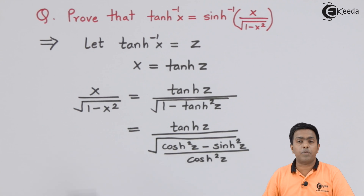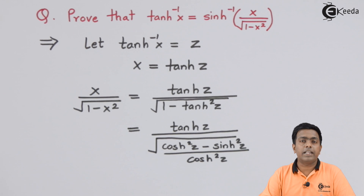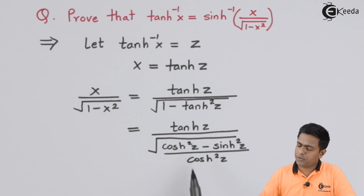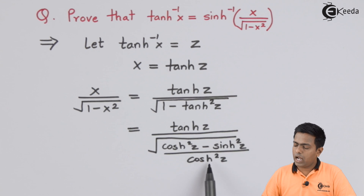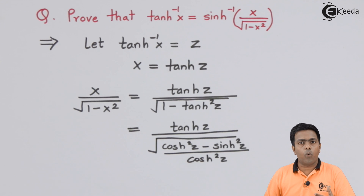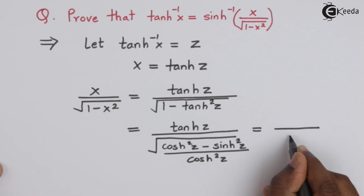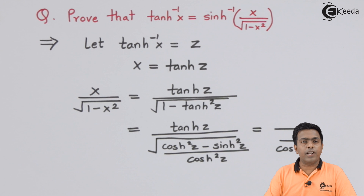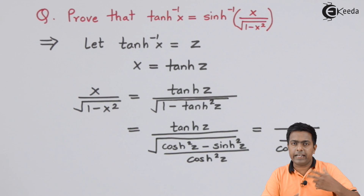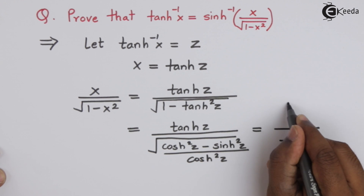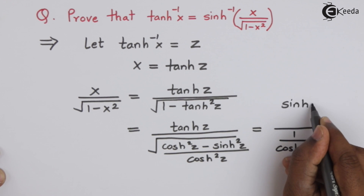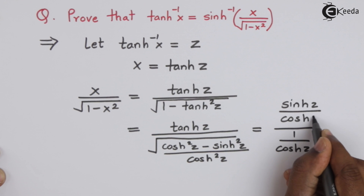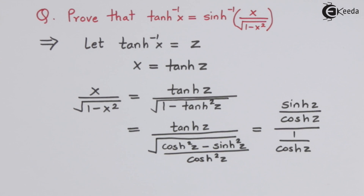In the denominator we have cosh²(z) - sinh²(z), and we know this equals 1. So we substitute it as 1, and the square root of 1/cosh²(z) is 1/cosh(z). Then rewriting tanh(z) as sinh(z)/cosh(z) and canceling the cosh terms gives us simply sinh(z).